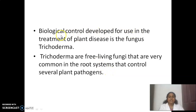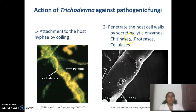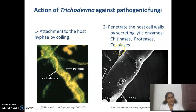Biological control has also been developed for plant disease treatment using the fungus Trichoderma. Trichoderma are free-living fungi very common in the root system that control several plant pathogens. They attach to the host hypha by coiling and can penetrate cell walls by secreting lytic enzymes — including chitinase, proteases, and cellulase — to cleave chitin, protein, and cellulose respectively.